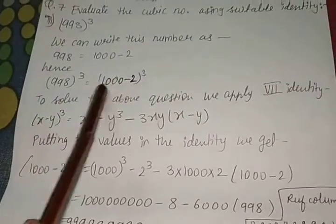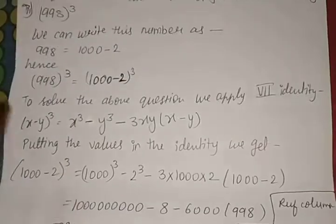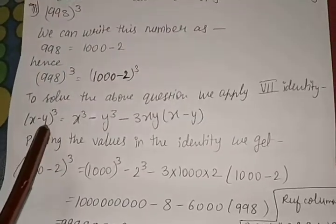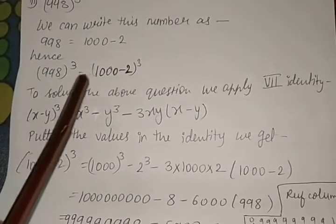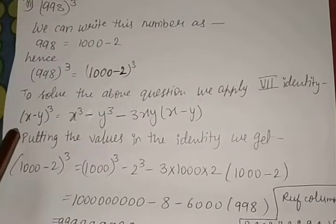We just get the values of x and y as x equals 1000 and y equals 2. I repeat, x equals 1000 and y equals 2. That means in the place of x and y, we will put 1000 and 2.